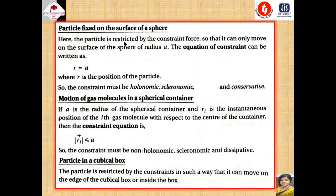Next: particle fixed on the surface of a sphere. When the particle is restricted by the constraint force so that it can only move on the surface of a sphere of radius a, the equation of constraint can be written as r = a, where r is the position of the particle. The constraint is holonomic, scleronomic, and conservative — it can be written in equation form, is time-independent, and the work done by the constraint forces is zero.